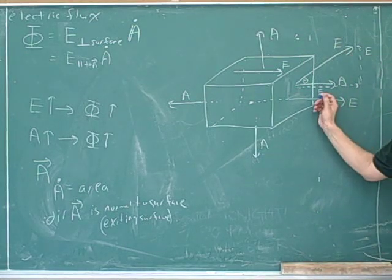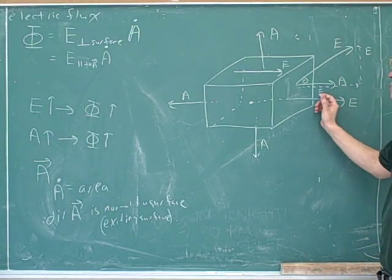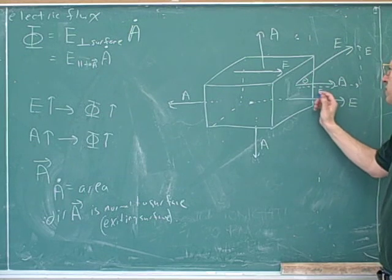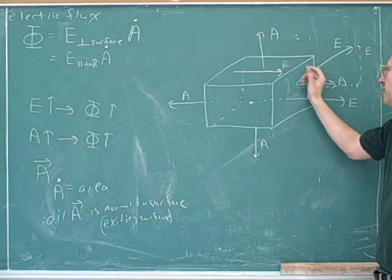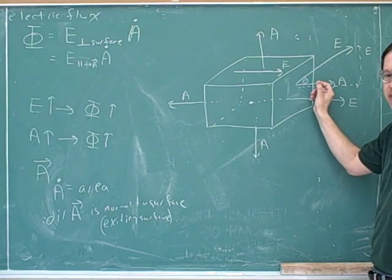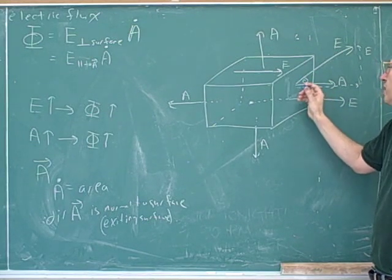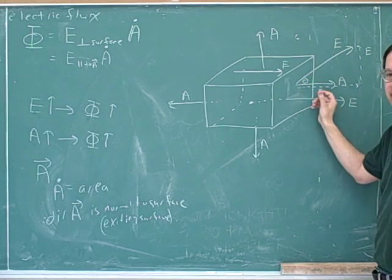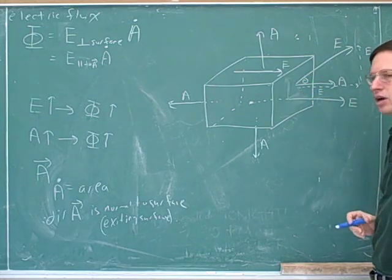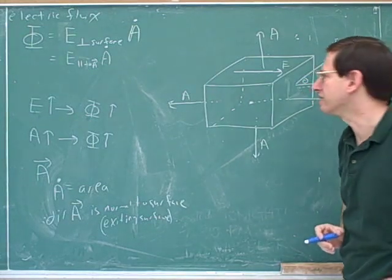So this is the component of E that we need. Using this angle, we can find the angle between E and the A vector. Do we want to use the cosine or the sine? Cosine — that's right.